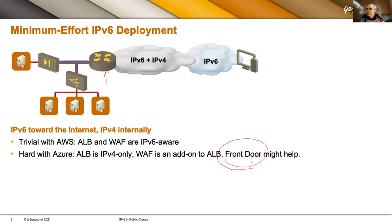Similarly, for an IPv6-only network, AWS makes it a piece of cake — they just announced IPv6-only networks. Put an application load balancer on the outside with IPv4 outside and IPv6 inside, and the problem is solved. With AWS, you can do anything you wish. With Azure, you're more limited, but you can still get it working if you really insist.